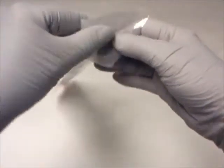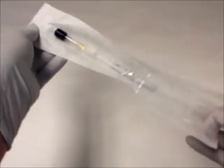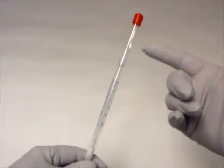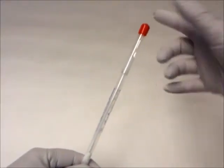First, remove the swab from the plastic protective sheath by grasping the top of the swab connected to the area with the red cap. Twist and pull out.